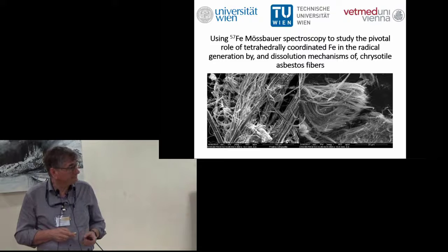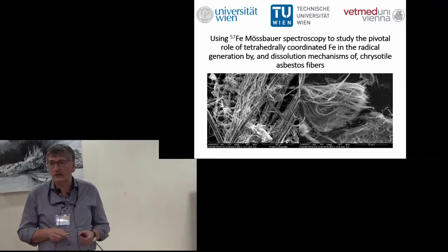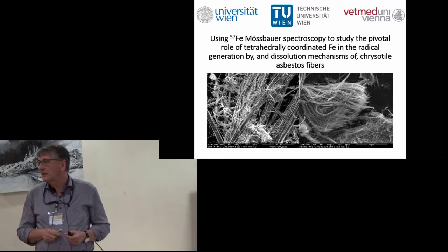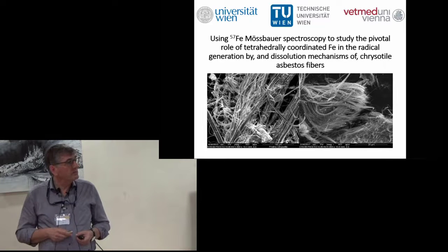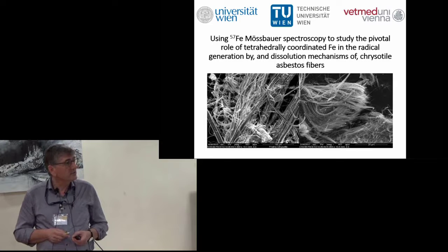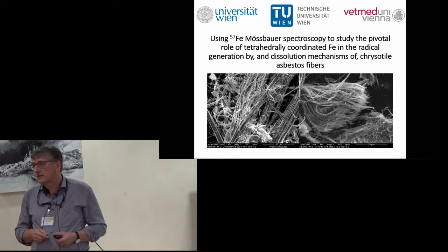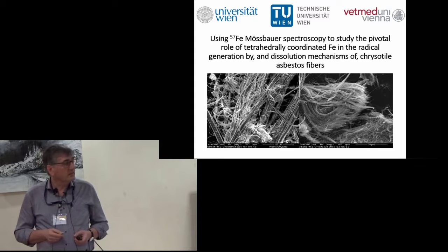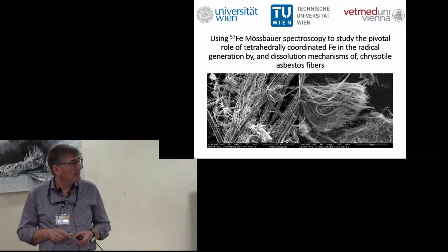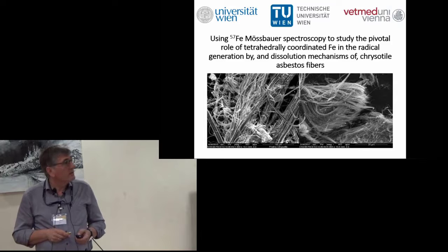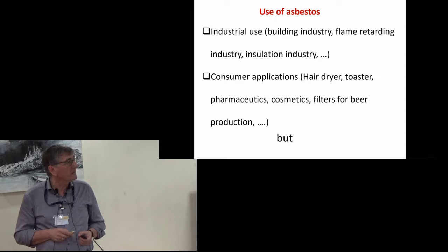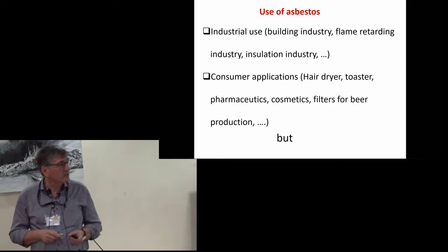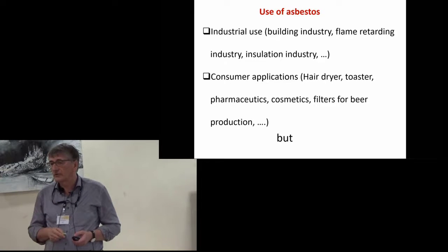Asbestos is a mineral used for more than 100 years very extensively in industry because of its special physical properties: high fire and heat resistance, resistance against chemical and biological weathering, high flexibility, and high tensile strength of its fibers. It's mostly used in buildings as insulation material, but also found in many consumer applications like hair dryers, toasters, pharmaceuticals, cosmetics, even as filters for beer production.